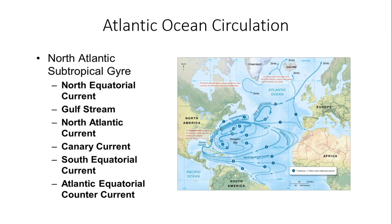Looking at a zoomed-in version of the Atlantic Ocean circulation — the North Atlantic Subtropical Gyre is composed of the North Equatorial Current, the Gulf Stream Current, the North Atlantic Current, the Canary Current on its east side, the South Equatorial Current, and the Atlantic Equatorial Counter Current. There is a huge surplus of heat at the equator and a heat deficit at the polar areas, and these major ocean current circulations transport a considerable amount of heat from low latitudes to high latitudes, trying to eliminate that imbalance.